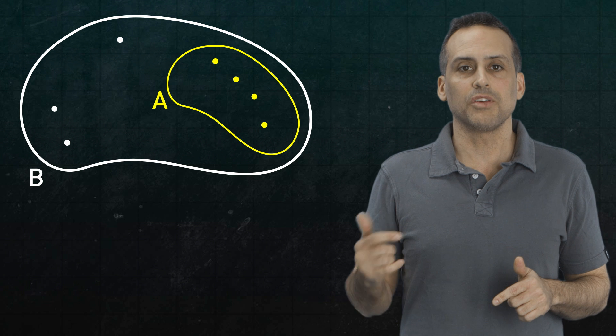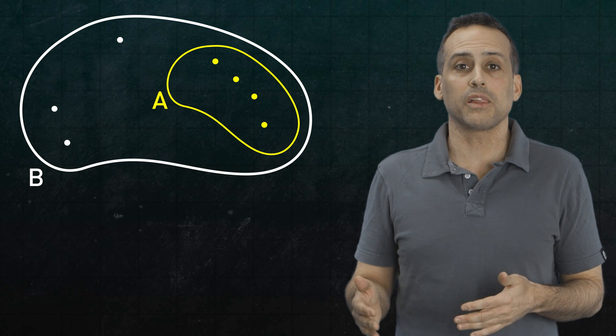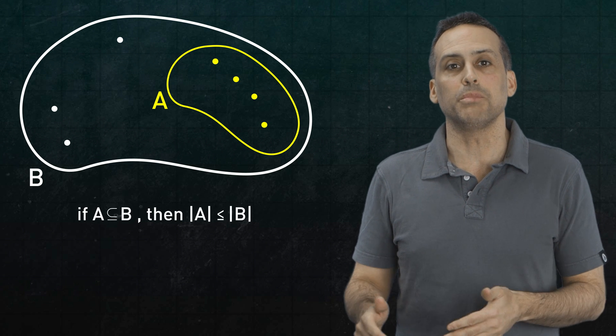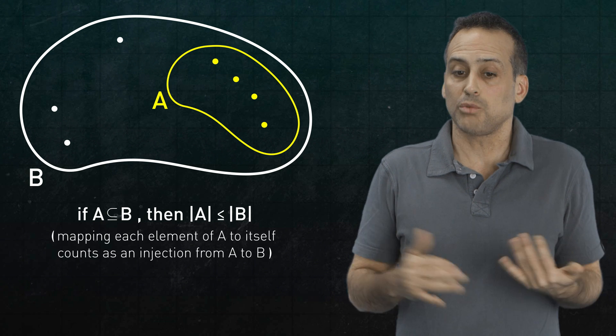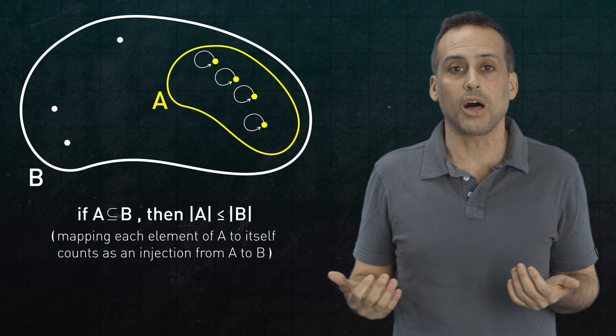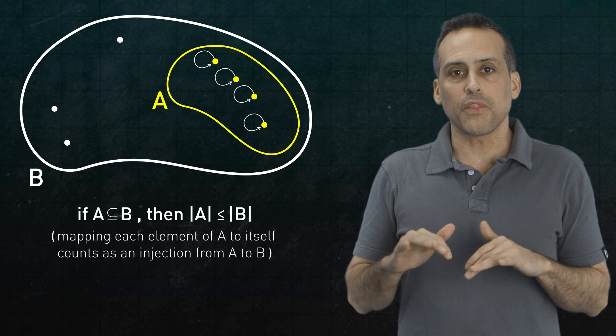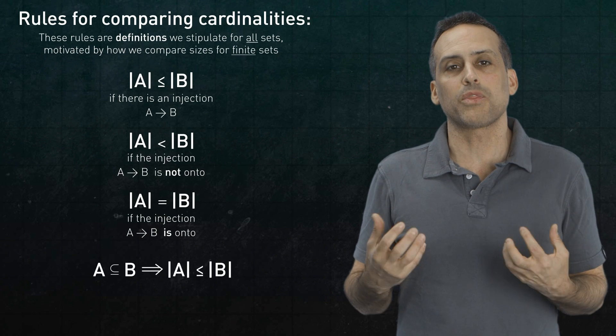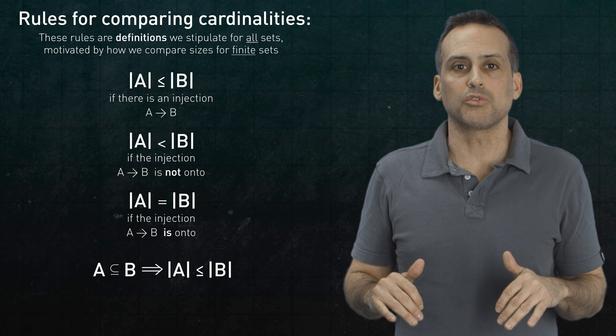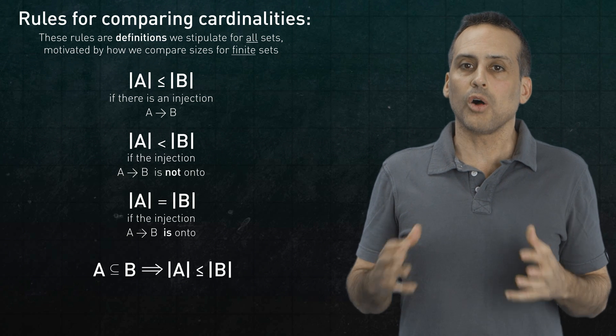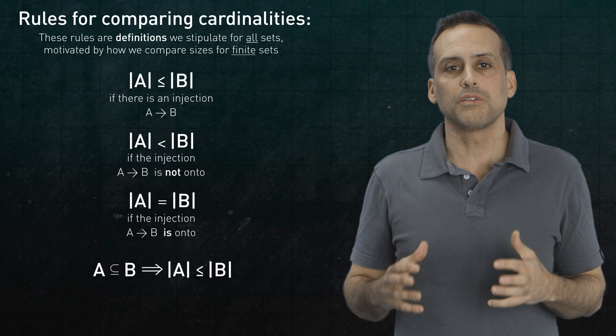Notice in particular that if a set A is a subset of a set B, then A's cardinality has to be less than or equal to B's, since you can for sure inject A into B, just by mapping each element of A to itself. It's good to note that these comparison rules are just motivated by what we know about the behavior of finite sets. And we're just stipulating obedience to these rules as a constraint on whatever ultimate definition we end up devising for cardinalities. So armed with these tools and terminology, let's make some observations.